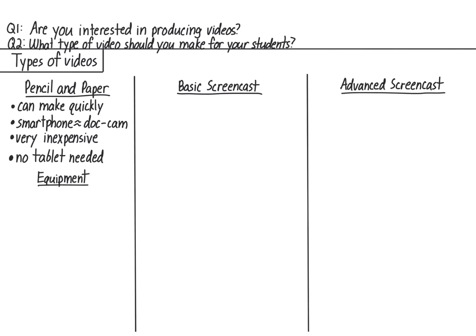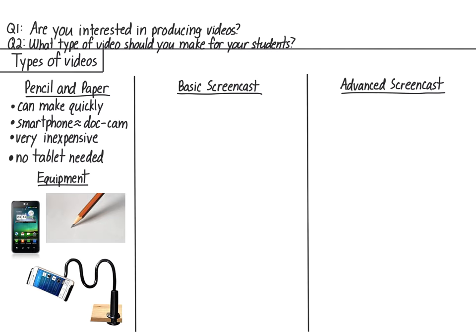The only equipment you need is a smartphone, pencil and paper, and a holder for your smartphone. If you have all three, you can get started right away. If you don't have a smartphone holder, these can be bought for around $30. All of the equipment and software I mention in this video, and their prices, as well as links to purchase them, can be found in a document you can access through a link I'll leave below this video.